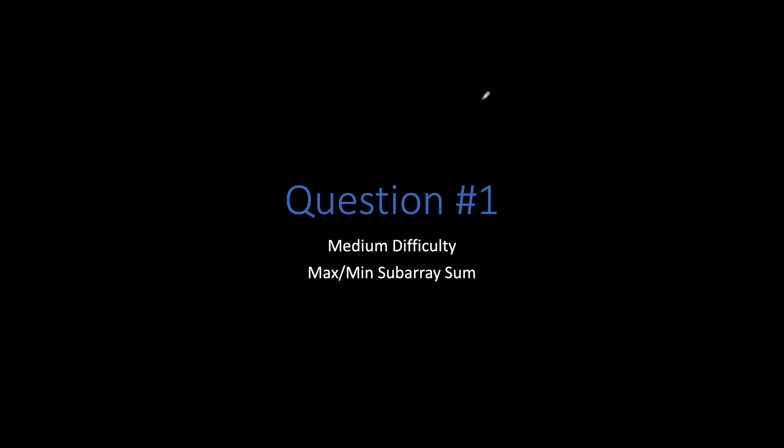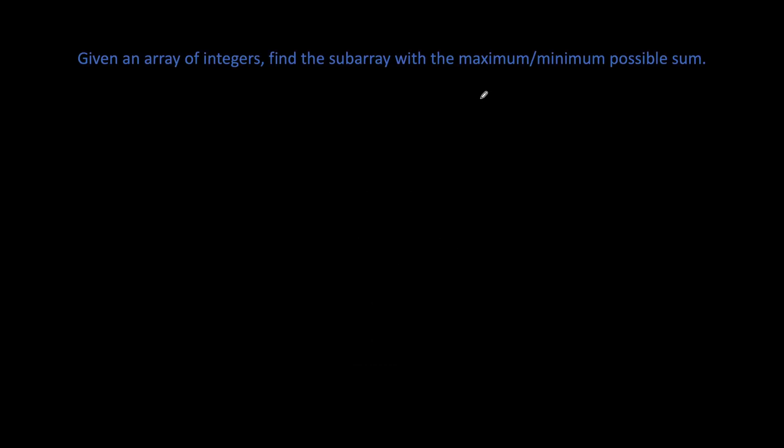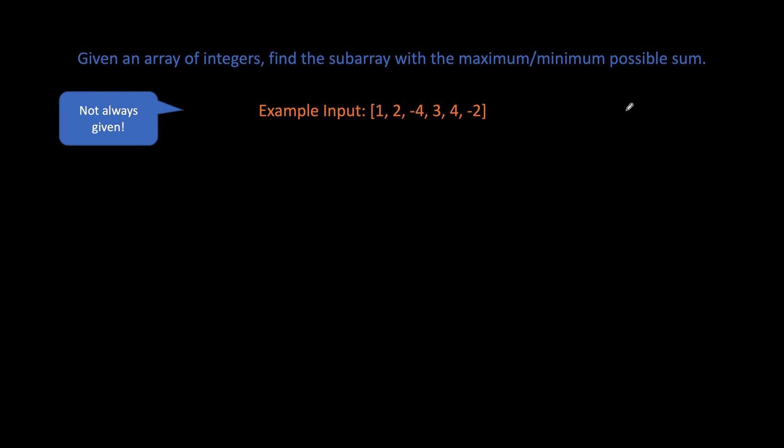Now let's start with a real-world question. This is a medium difficulty one, and it asks us to find the maximum-minimum subarray sum. Given an array of integers, find the subarray with the maximum-minimum possible sum. Here's our example input. I'd like to iterate that you might not always be given an example input — if you're not given one, create one for yourself so you can work on it.